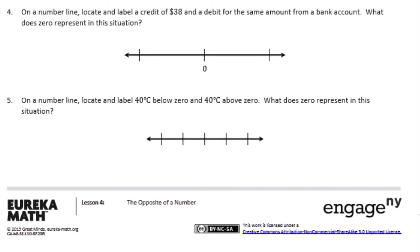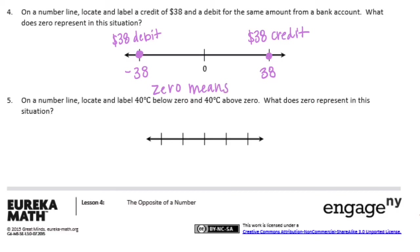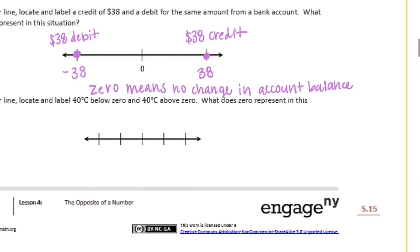Number 4: on a number line, locate and label a credit of 38 dollars and a debit for the same amount from a bank account. A credit would be positive 38 dollars — label that as the 38 dollar credit. A debit means it has been deducted, so negative 38 — that is the 38 dollar debit. Zero here means no change in account balance.